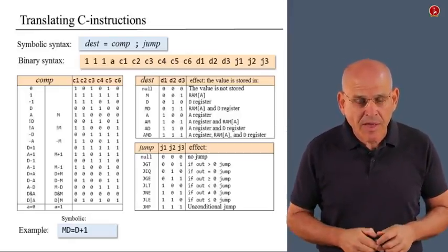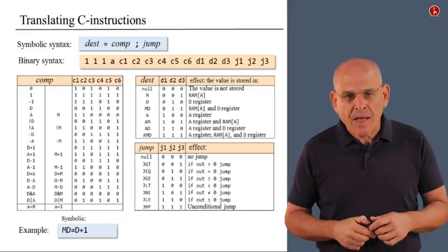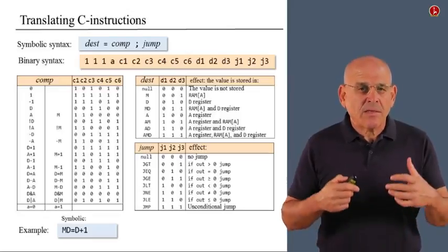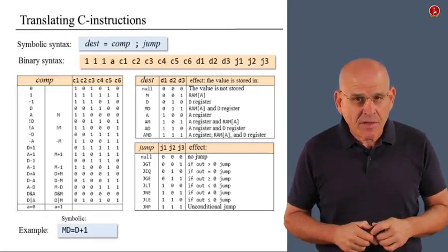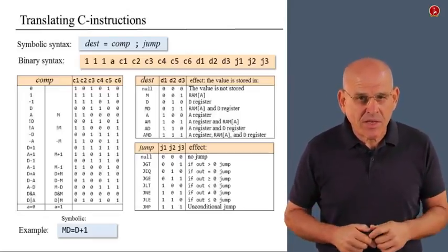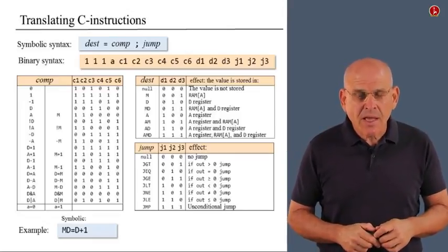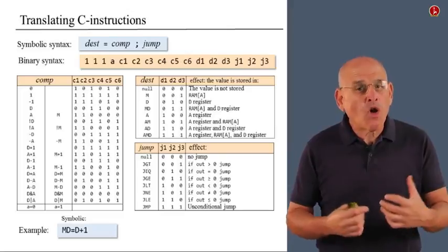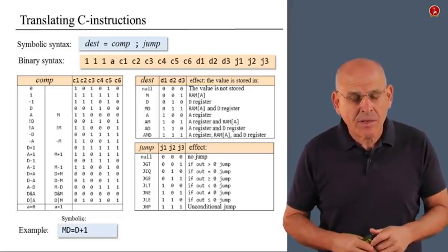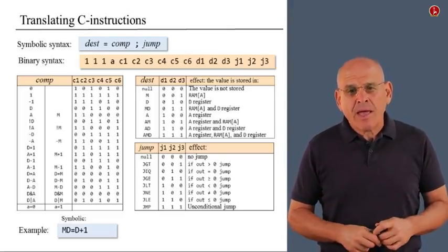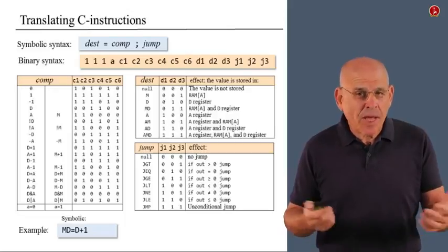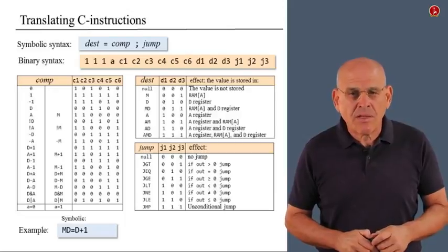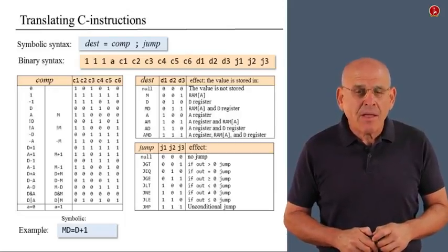So, in the example that we have here, the MD mnemonic is the destination field, or the value of the destination field in this particular instruction. Then comes D plus 1, which is the value of the comp or computational, computation field. And we also have a jump field, which happens to be null. We don't have a jump instruction here, so the jump is null.